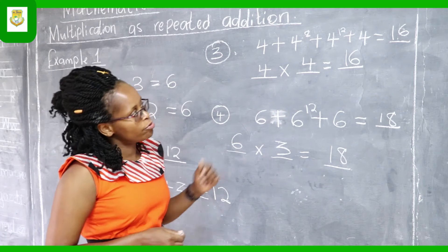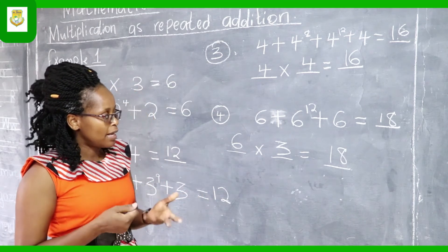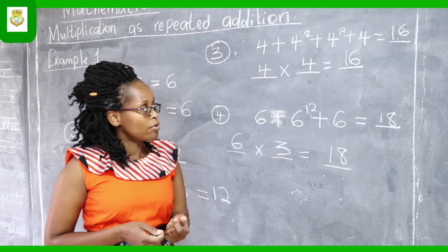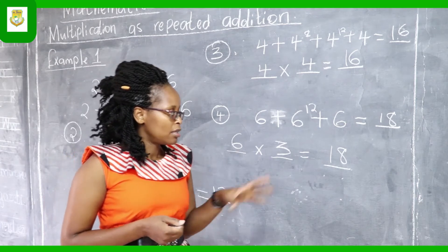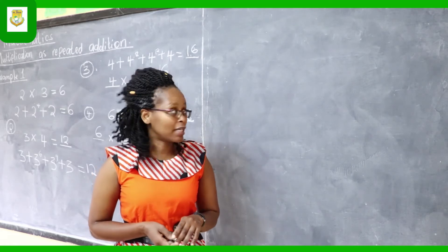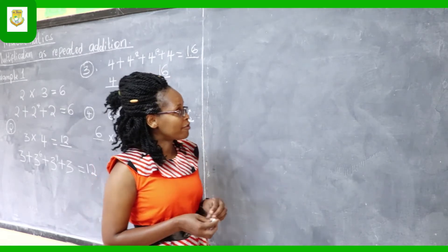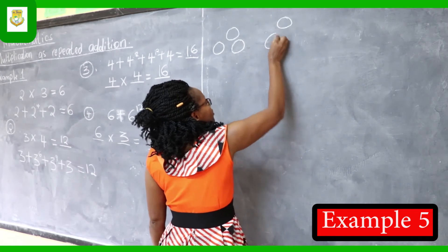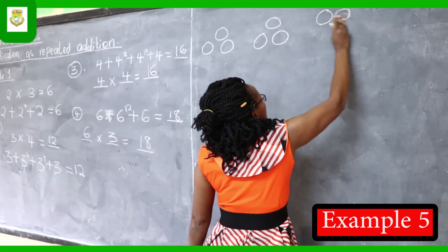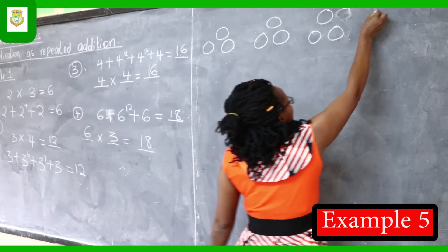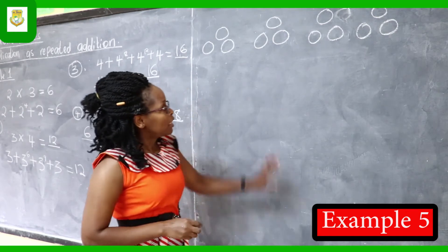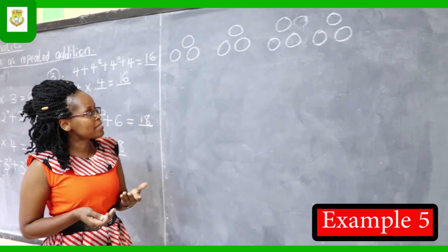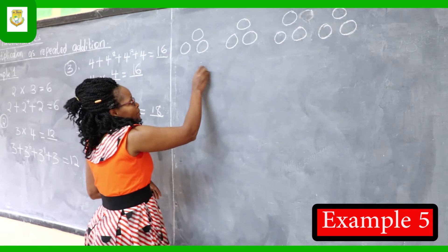We can practice more examples from our books so that we become well conversant with the subtopic. Now we are going to take another example that involves diagrams. For instance, I have three oranges here, another three oranges, another three oranges, and another three oranges. Whatever I have on the blackboard are oranges, and I want to put them together to find out the multiplication. We have dash times dash equals dash.